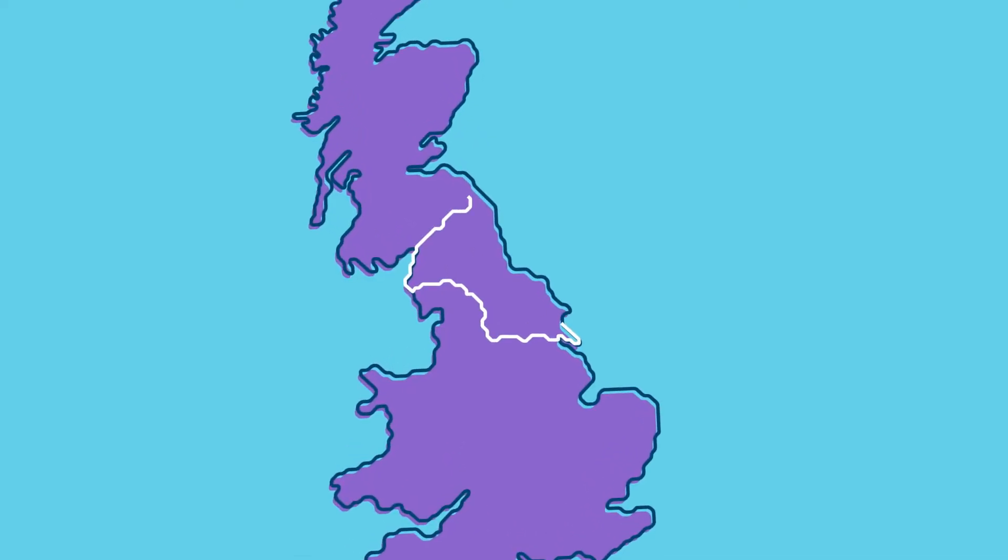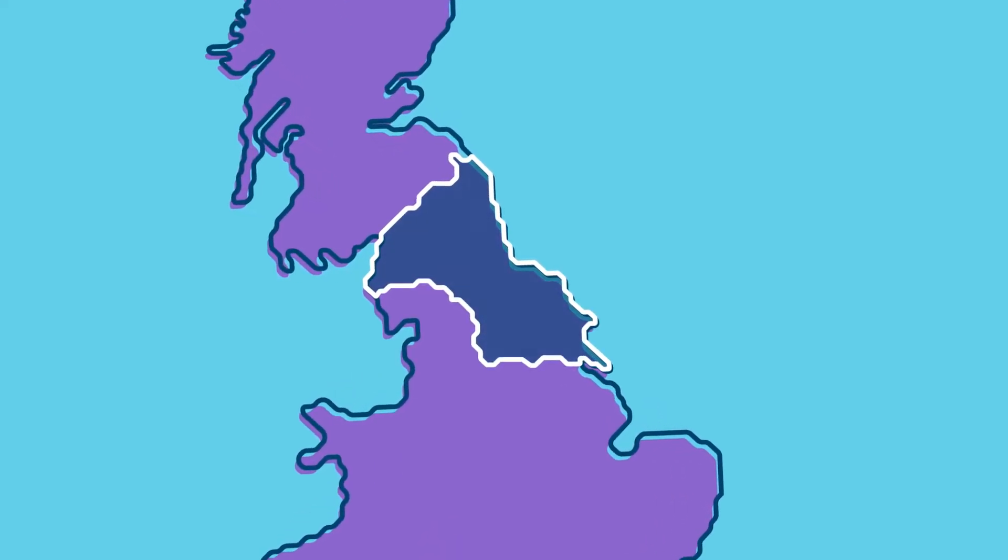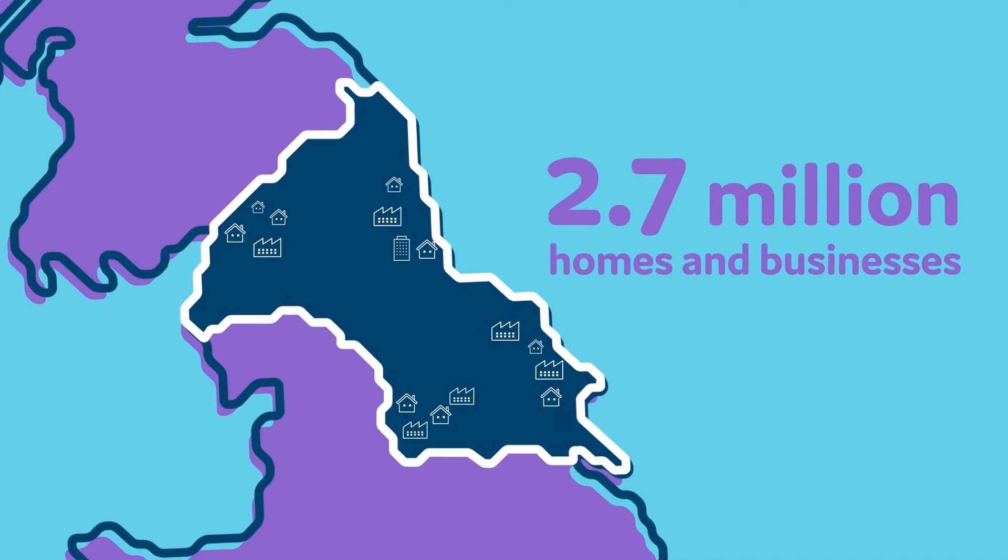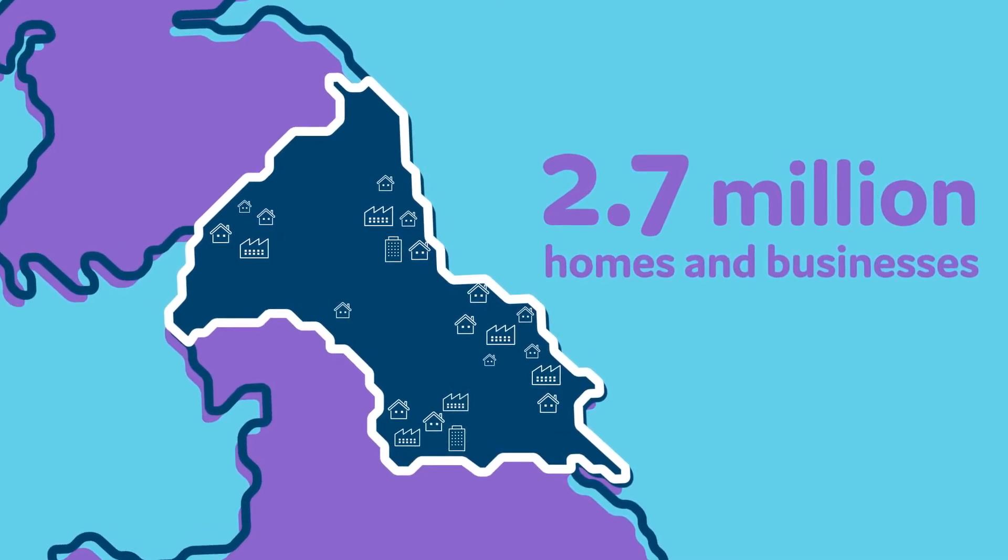Northern Gas Networks is the gas distributor for the north of England, supplying gas to 2.7 million homes and businesses from the Scottish borders to Yorkshire.